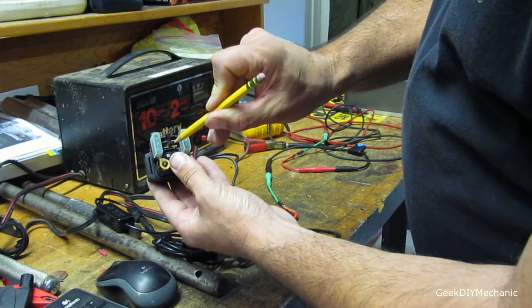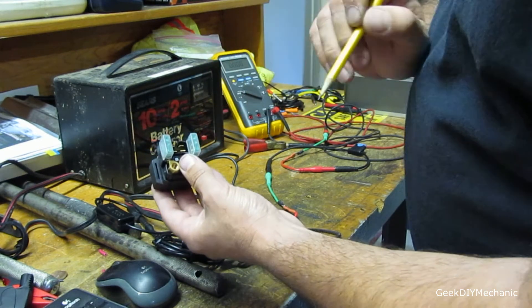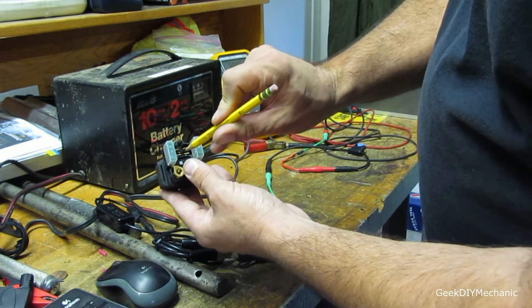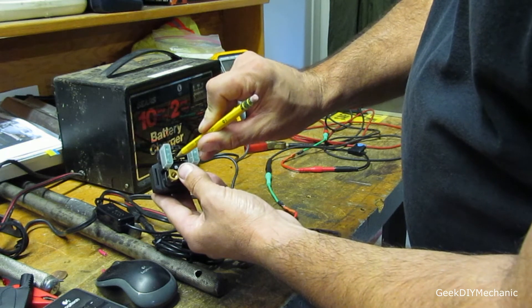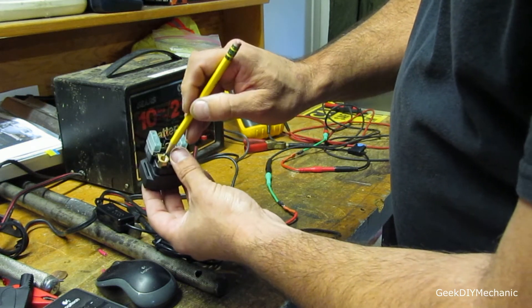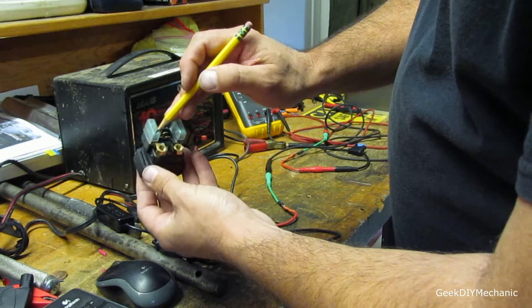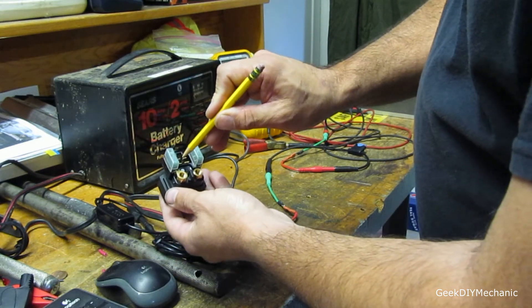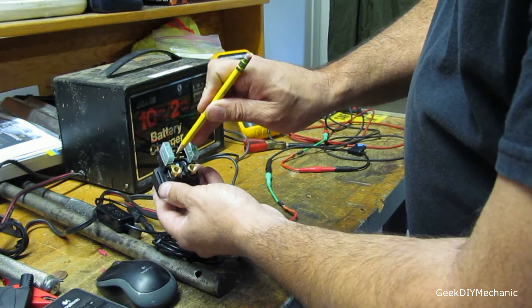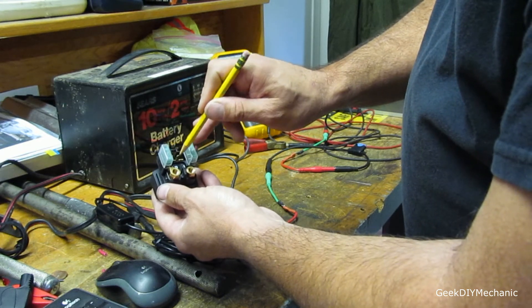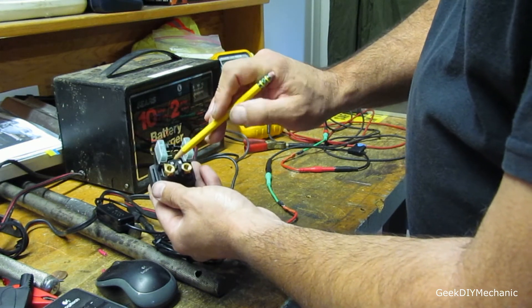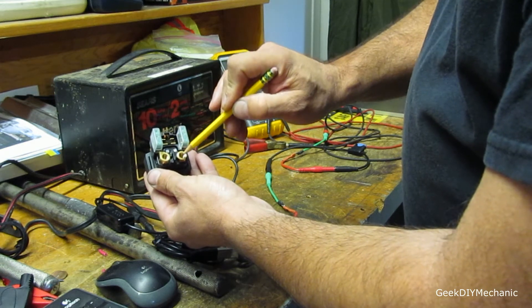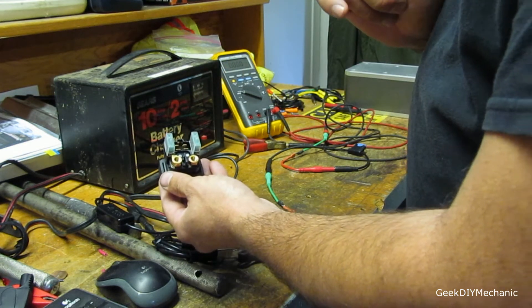These two terminals are the control terminals to the relay. So if you apply current through these two terminals, it will connect these two. So that would, let's say, start your motorcycle. When you hit the start button, current is allowed to flow between these two terminals, connecting these two, allowing voltage to go from this terminal to this terminal, which would then go to your starter.